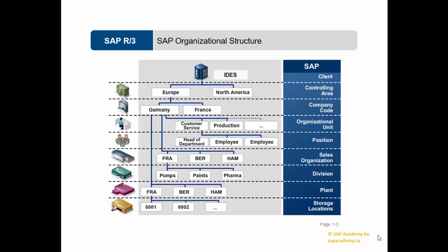Every organization has some framework or structure defined according to which the whole business runs. Enterprise structure is the structure that represents an enterprise in the SAP ERP system. It is subdivided into various organizational units which, for legal or business-related reasons, are grouped together. Enterprise structure defines various levels in an organization, placed according to some hierarchy, where each level has specific functionality that collectively describes the workings of an organization.